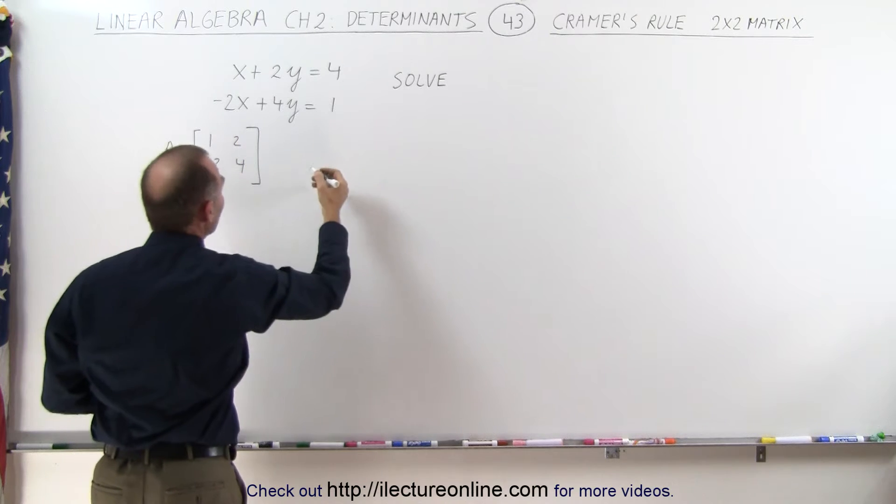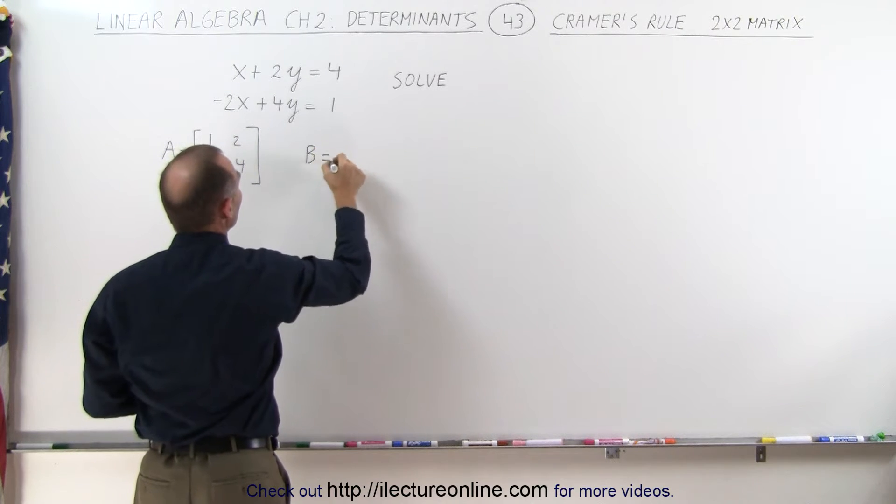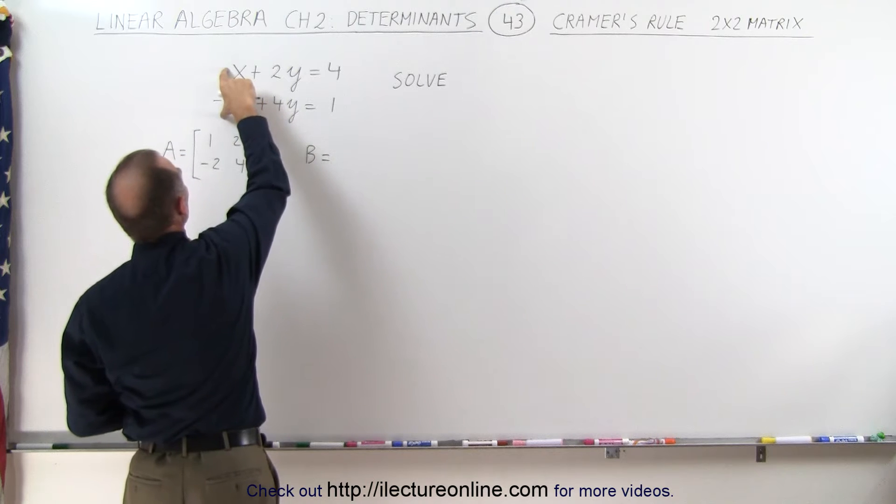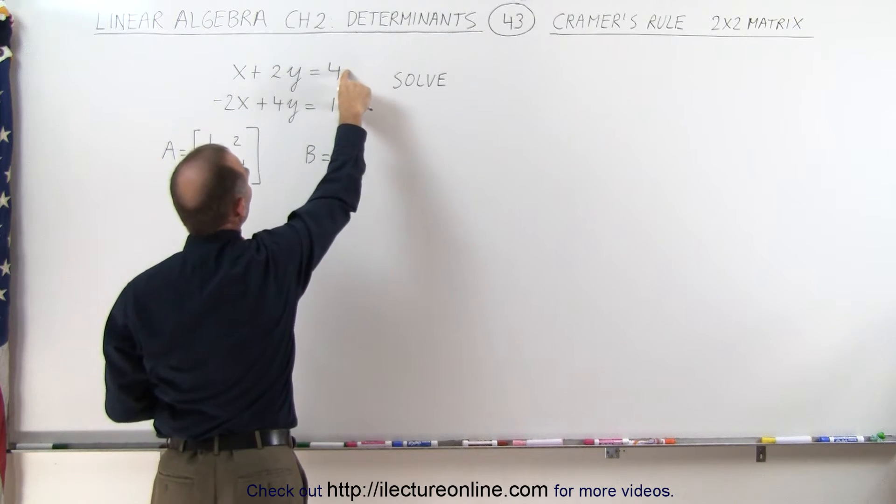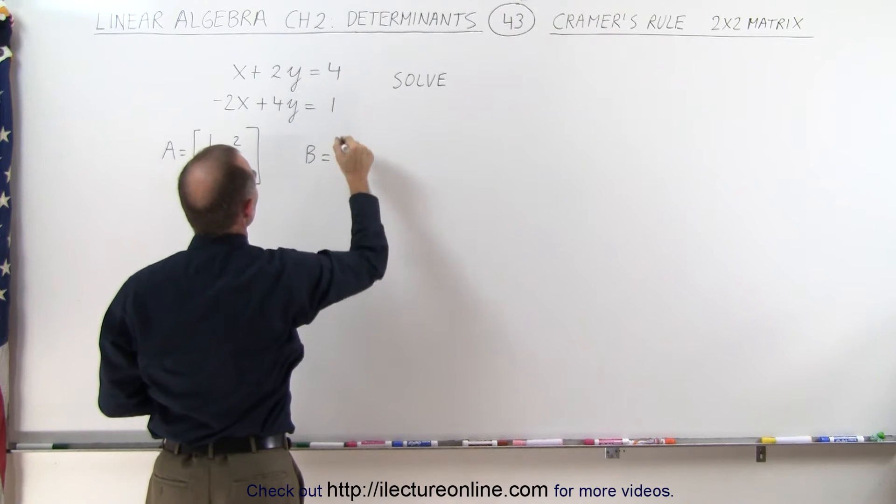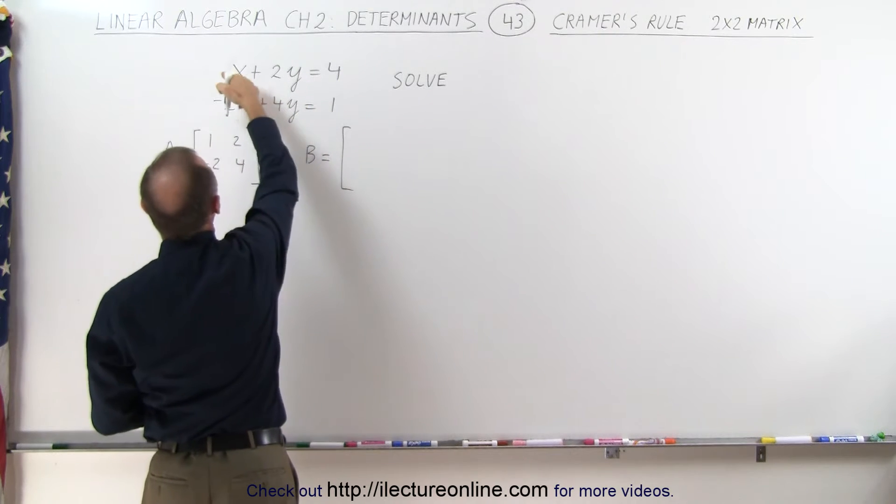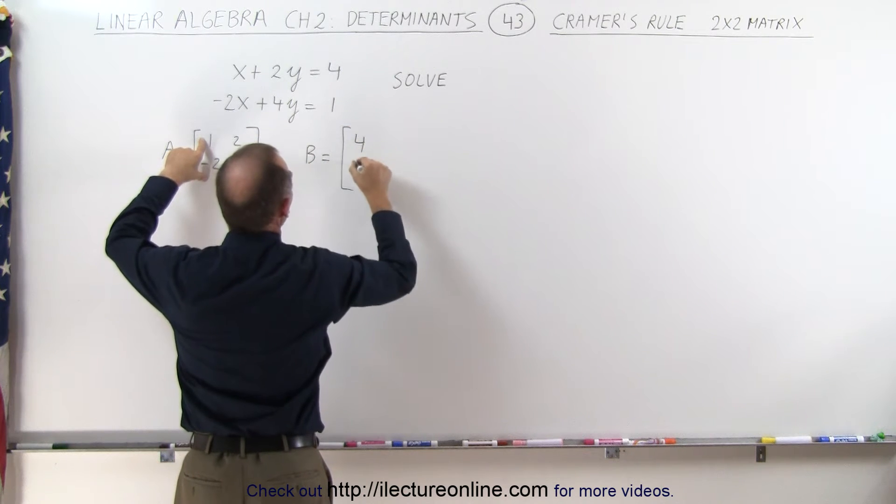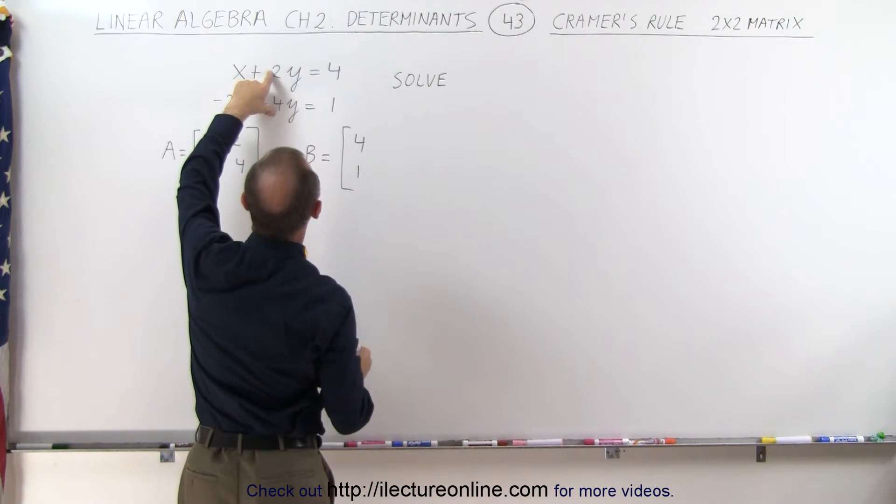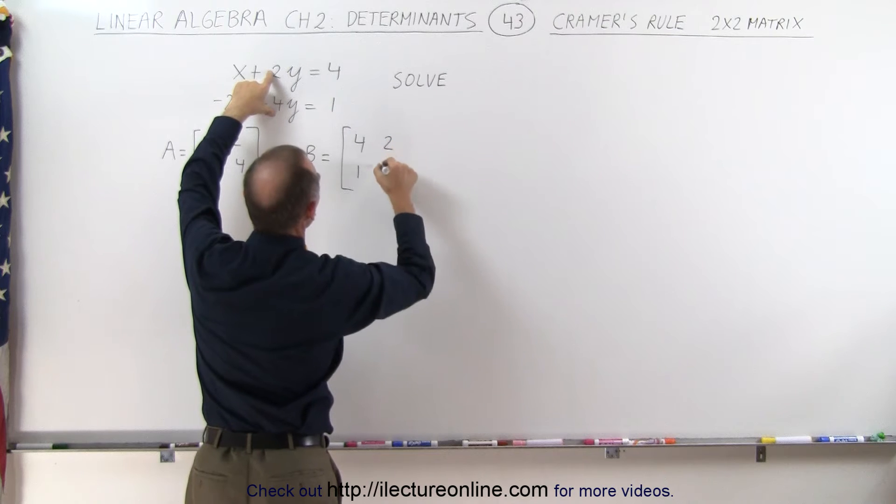The second matrix, let's call it B, is created by replacing the coefficients of the first variable, the x variable, with the constants that we have on the other side of the equal sign. So instead of 1 and -2 that we have here, it'll become 4 and 1, and we maintain the coefficients of the second variable, 2 and 4.